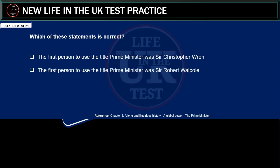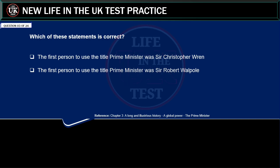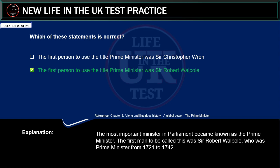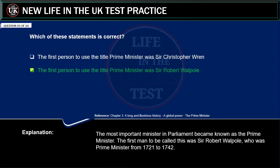Which of these statements is correct? The first person to use the title Prime Minister was Sir Christopher Wren. Or: the first person to use the title Prime Minister was Sir Robert Walpole. Correct answer: Sir Robert Walpole. Explanation: the most important minister in Parliament became known as the Prime Minister. The first man to be called this was Sir Robert Walpole, who was Prime Minister from 1721 to 1742.